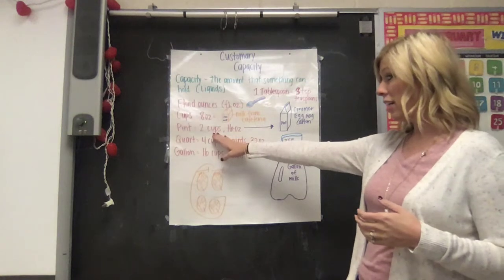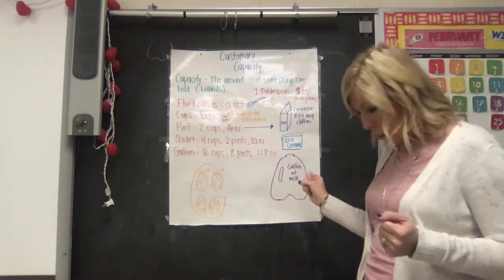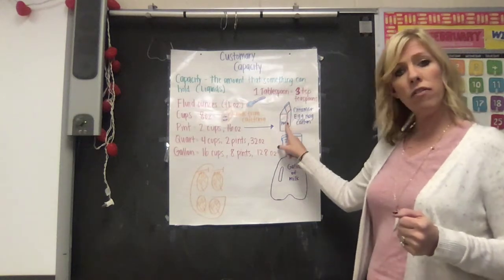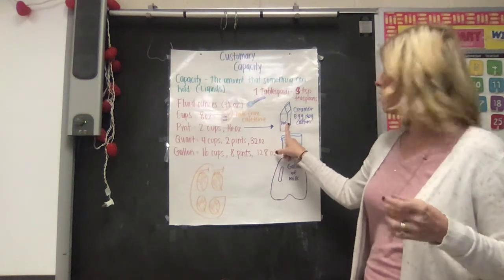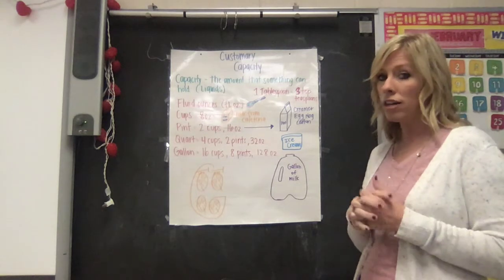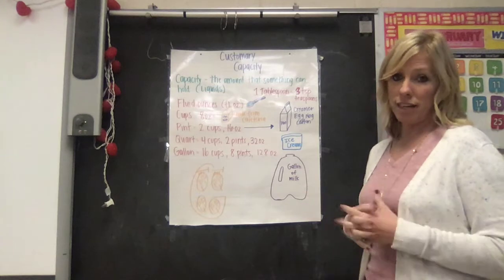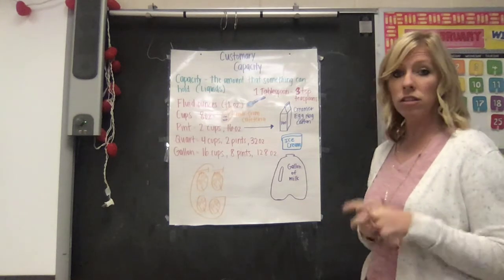A pint is another measurement. That is two cups or 16 ounces. If you're here with me at school, the creamer that I use is usually in a pint. Or if you can picture an eggnog carton or another smaller milk carton, a lot of times that's a pint. It all depends on your container. As long as it has 16 ounces, you know that's a pint - two cups.